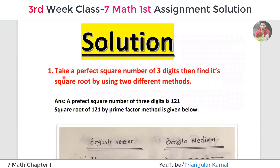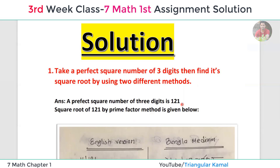The three-digit perfect square numbers include: 121, 144, 169, 196, 225.